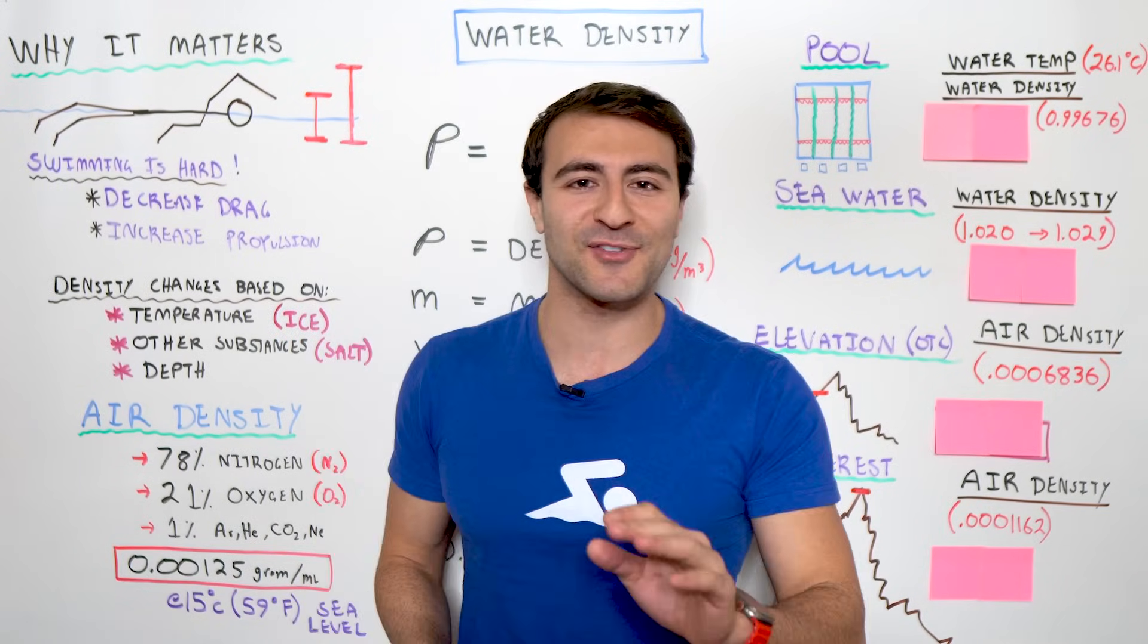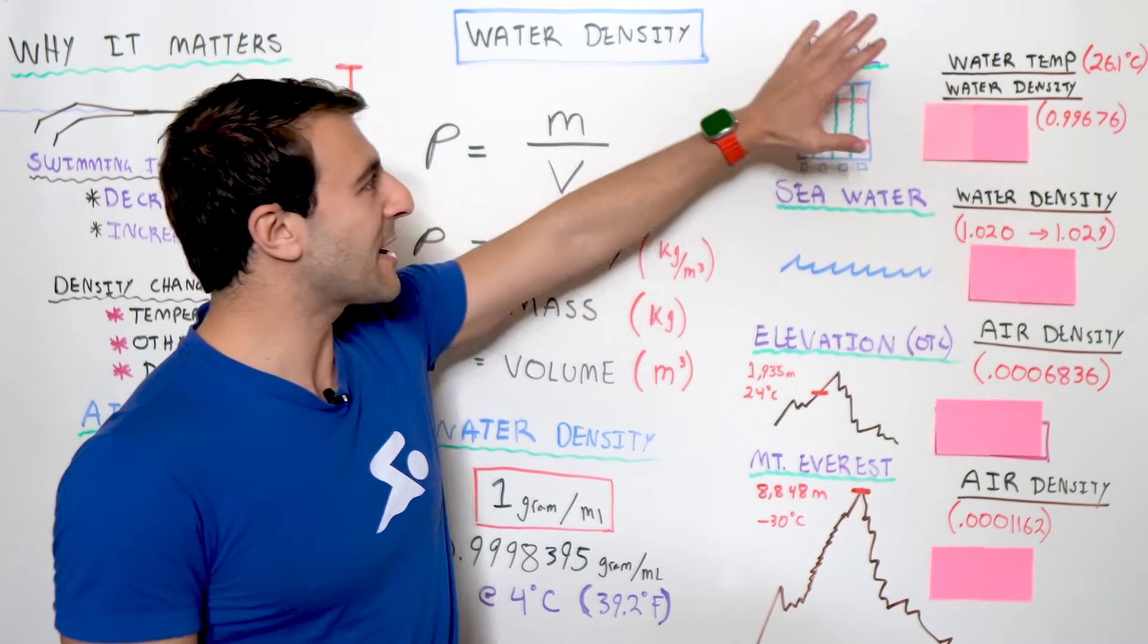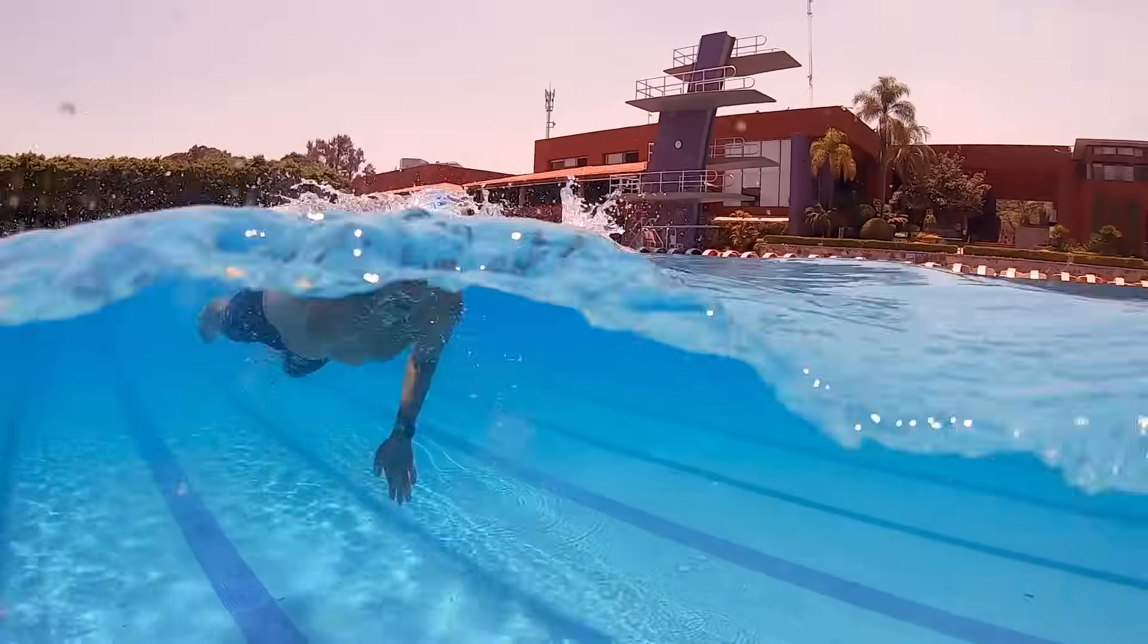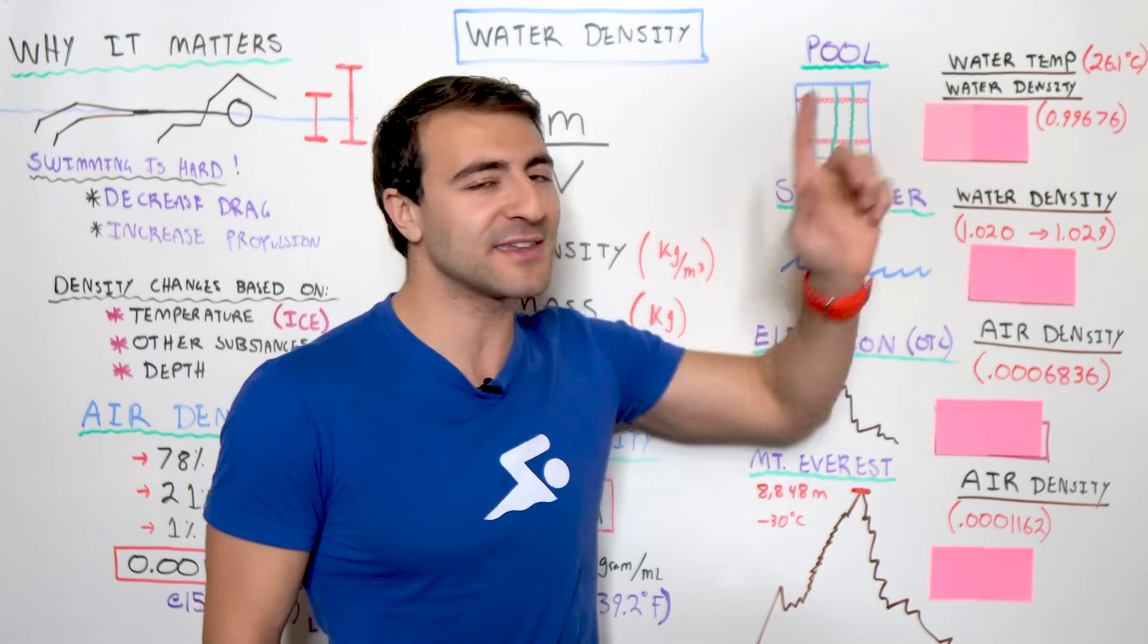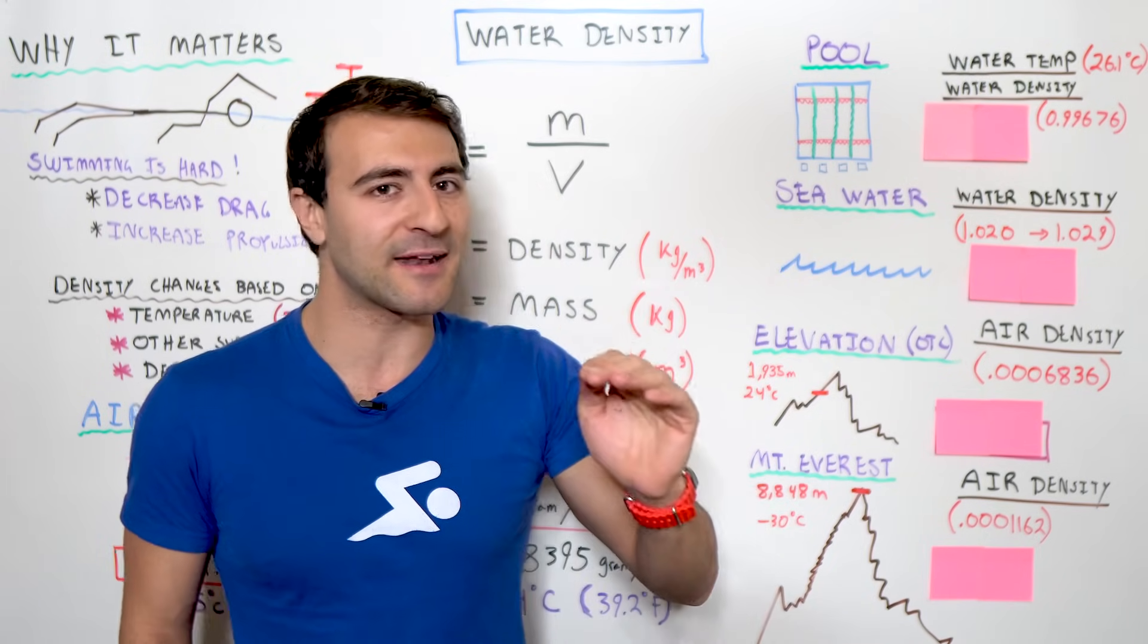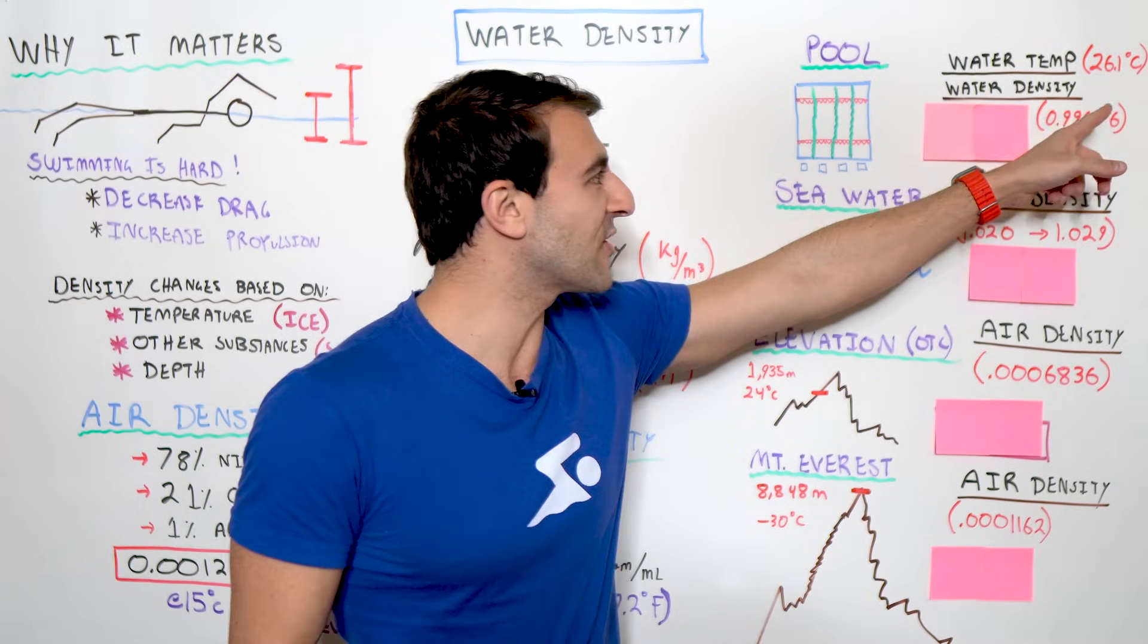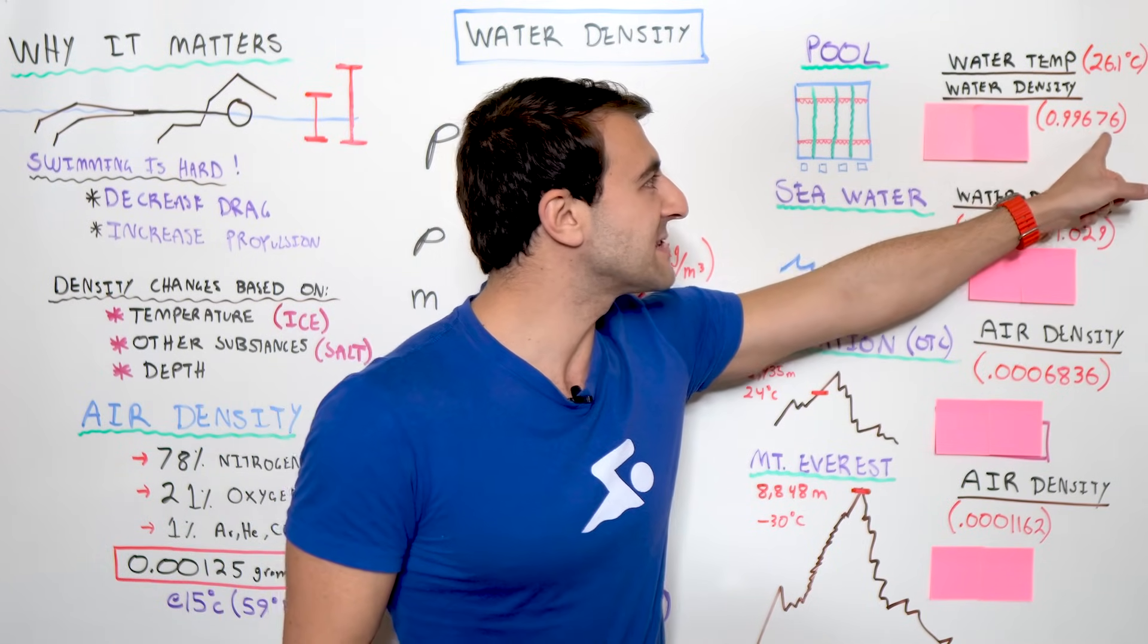If you guys enjoy this type of content, make sure you subscribe because I did all the math for you guys. Let's have some fun. So, let's go ahead and put some real numbers here. Let's imagine we're swimming in a pool. The water temperature is 26.1 degrees Celsius, which is 79 degrees Fahrenheit. That is the standard pool temperature.